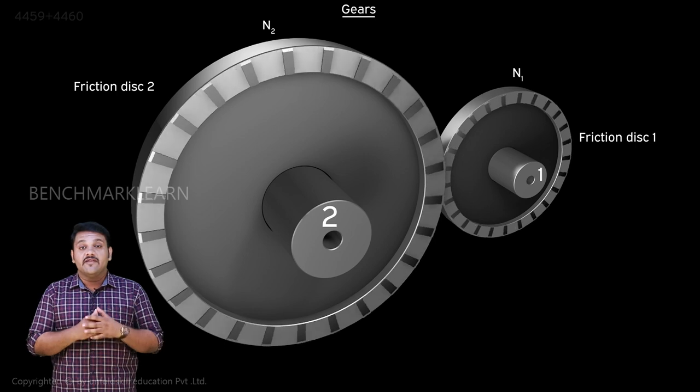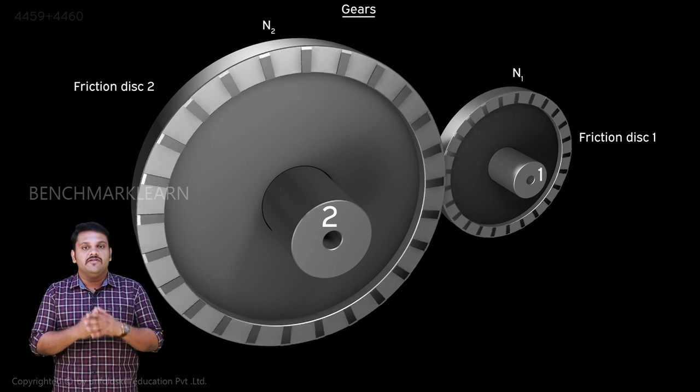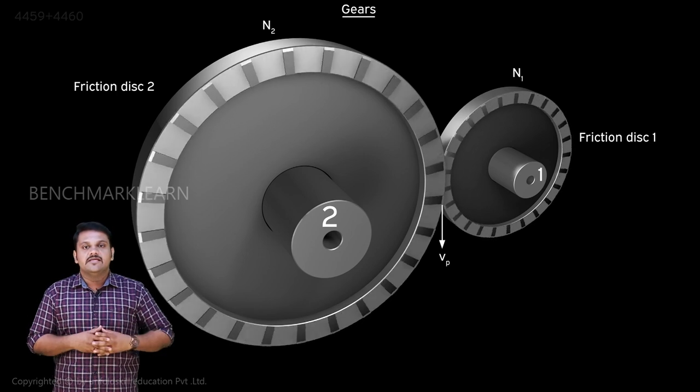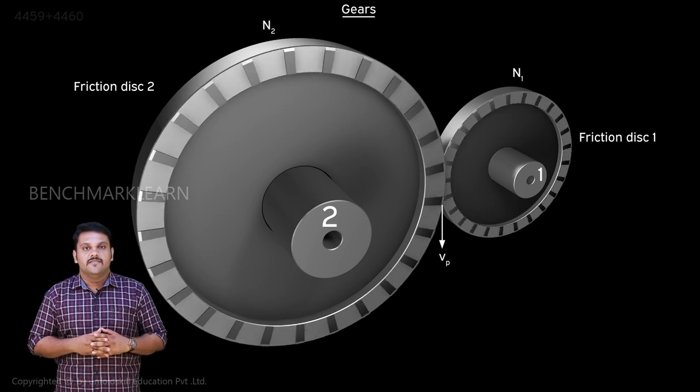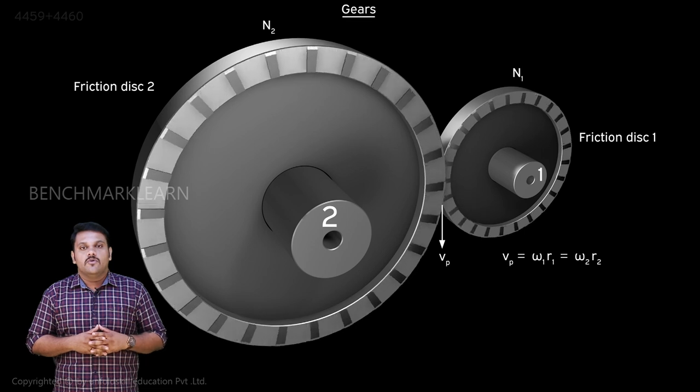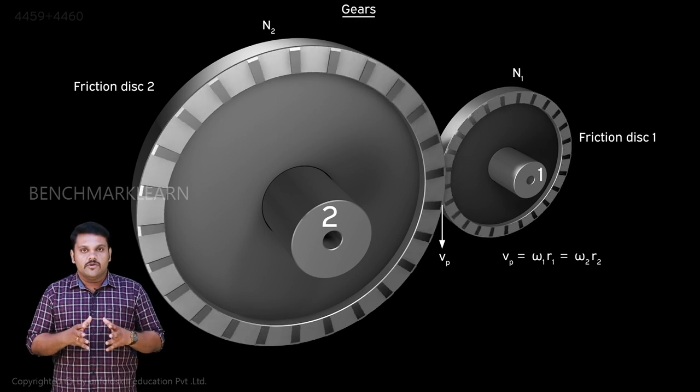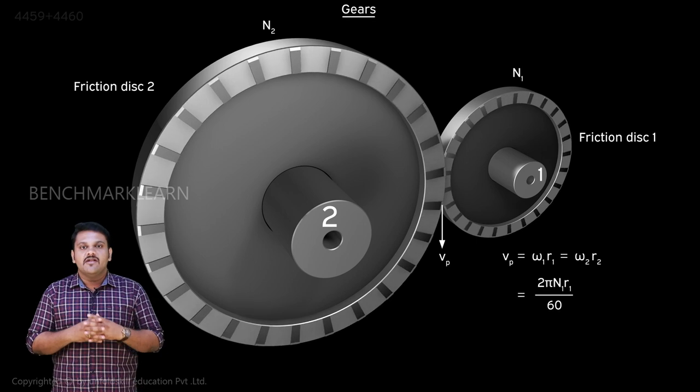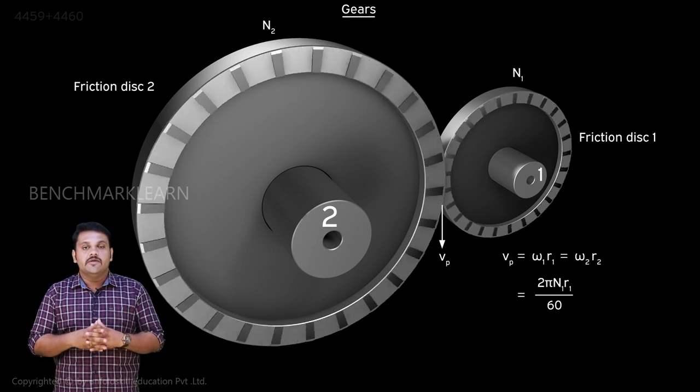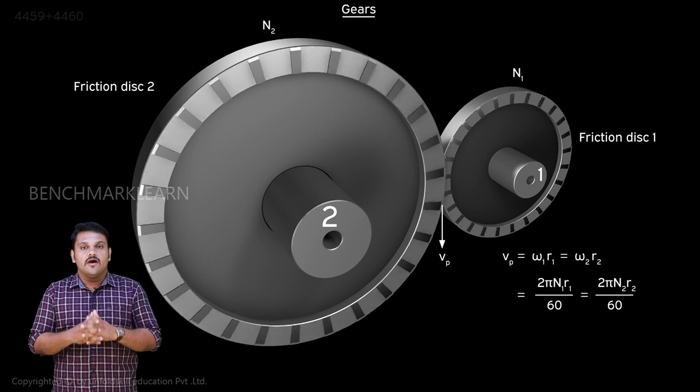Assuming no slip, we can write the relation between the speed of the discs. Let vp be the common linear velocity at the point of contact of the disc. vp = ω₁r₁ = ω₂r₂ = 2πn₁r₁/60 = 2πn₂r₂/60.